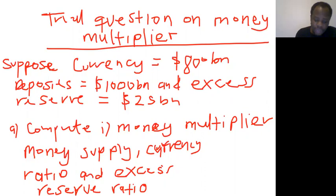I have some questions here that I want us to look at. The question reads: suppose currency equals 800 billion, deposits equal 1000 billion, and excess reserve equals 25 billion. In the first instance, we've been asked to compute money multiplier.